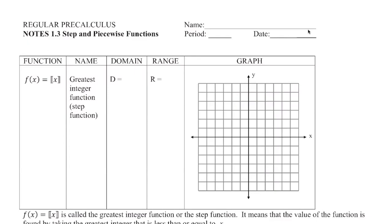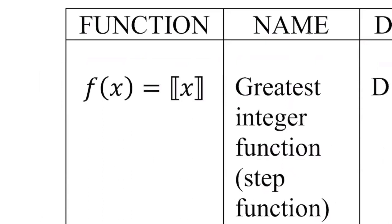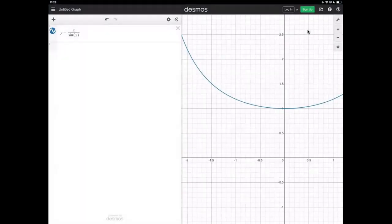Let's get started with step function. Let's talk about the symbol, because we have a new symbol right here that you probably have never seen before. This bracket with the extra vertical stroke inside is what we use for step function. If you use any kind of graphing applications such as Desmos, you may not see this symbol — it is called the floor function.